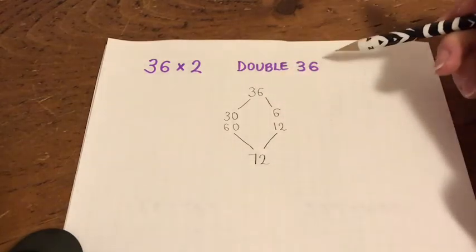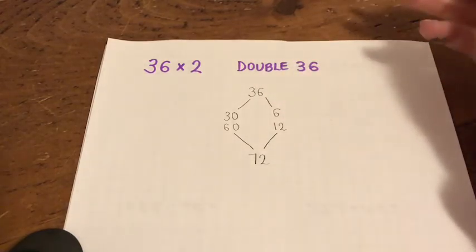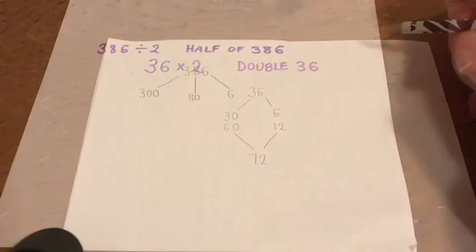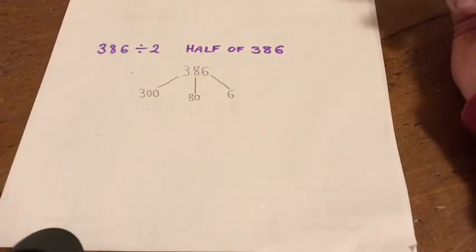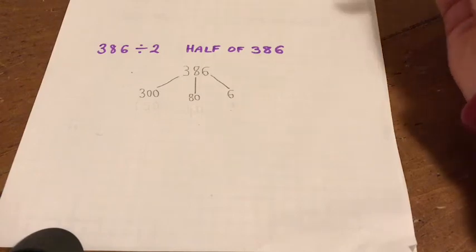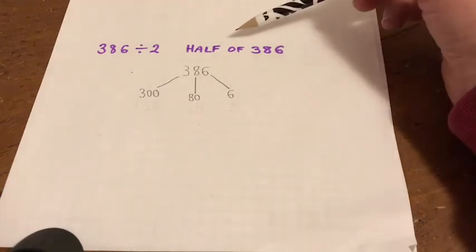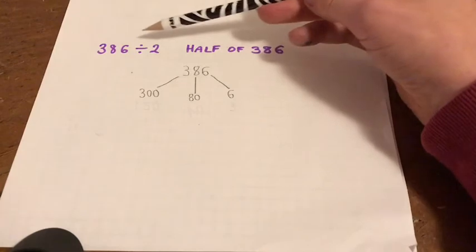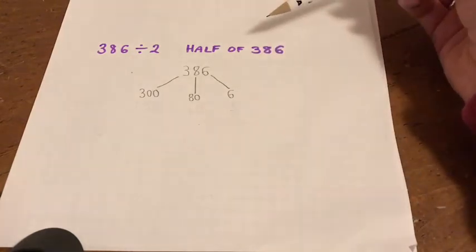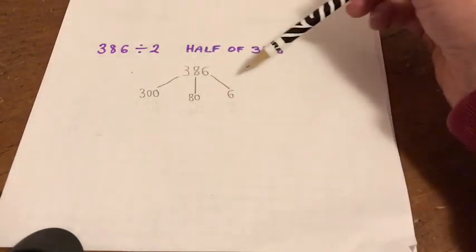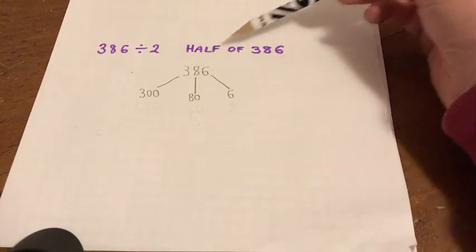Okay, so this time we're going to divide by 2. We're going to half a number, and divide by 2 is just the same as half. So this time we are doing 386 divided by 2. I've already started to lay it out here: 386.